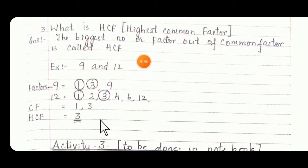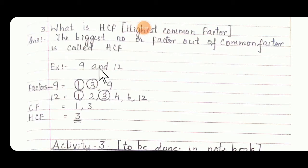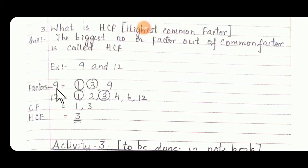What is HCF? HCF is nothing but highest common factor. The biggest number or the factor out of the common factors is called as HCF. Example: 9 and 12. So first write down the factors. Factors of 9 — that is how we are going to get it: table 1, table 3, and table 9.